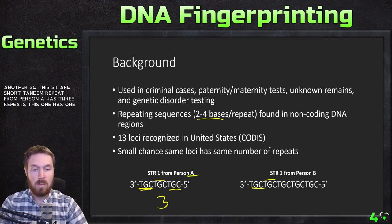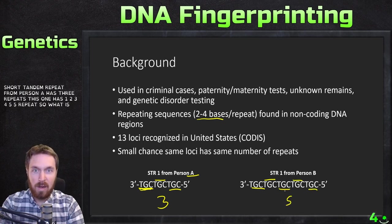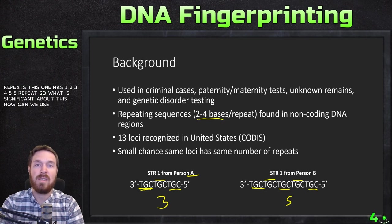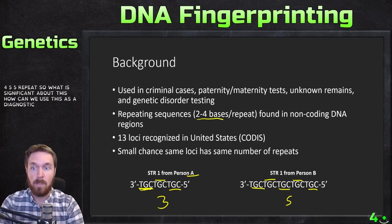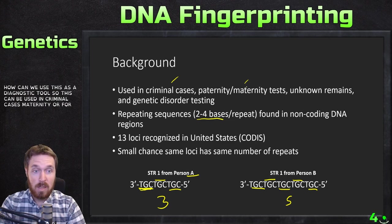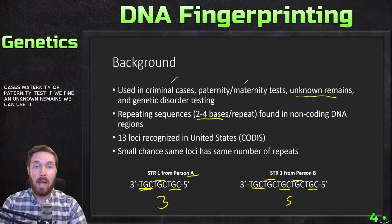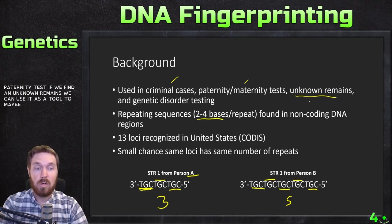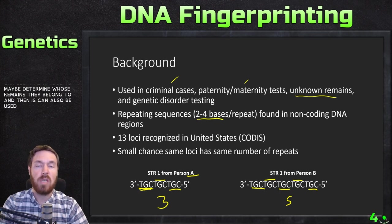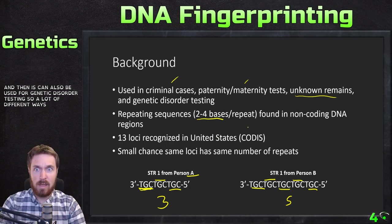Person B's STR at this same location has five repeats. This can be used as a diagnostic tool in criminal cases, maternity or paternity tests, identifying unknown remains, and genetic disorder testing — there are a lot of different ways STRs can be used.